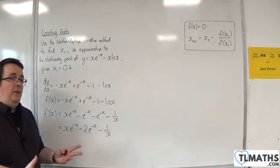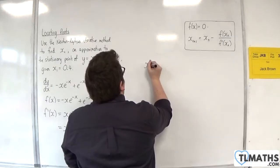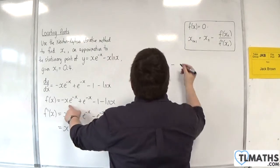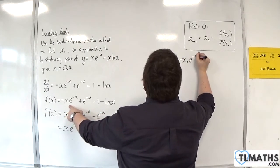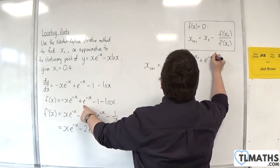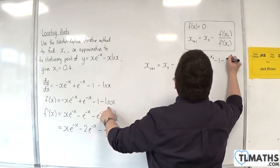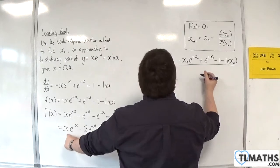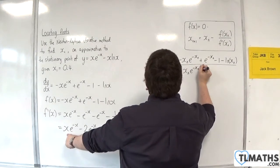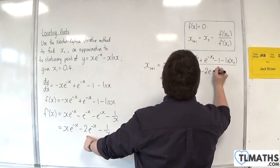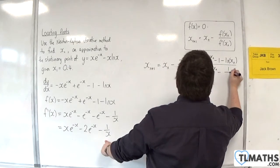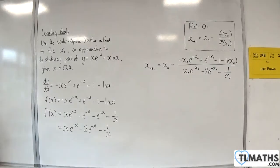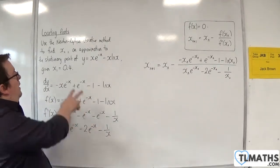And now I've got all the pieces I need to write out my formula. So xn plus 1 will be equal to xn take away f of xn, so minus xn e to the minus xn plus e to the minus xn take away 1 take away the natural log of xn, all over xn e to the minus xn take away 2 e to the minus xn take away 1 over xn. Now what I need to do is I now need to find x2. I've got x1 here.